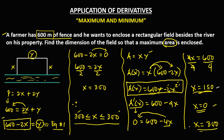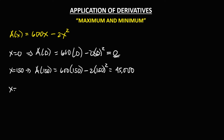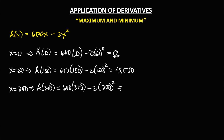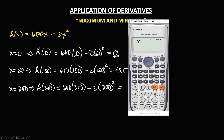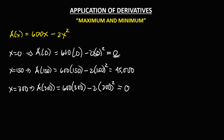For the last test, x equals 300: A(300) = 600 times 300 minus 2 times 300 squared. Computing: 180,000 minus 180,000, so the area equals 0. Comparing all three results — A(0)=0, A(150)=45,000, A(300)=0 — the maximum area is given when x equals 150. Therefore, x equals 150 meters.